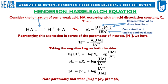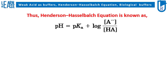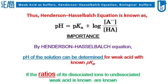Note that particularly when the concentration of undissociated weak acid HA equals the concentration of its negatively charged dissociated ion, pH equals pKa. By the Henderson-Hasselbalch equation, the pH of a solution can be determined for a weak acid with known pKa, if the ratio of concentration of its dissociated negative ion to the concentration of undissociated weak acid is known.